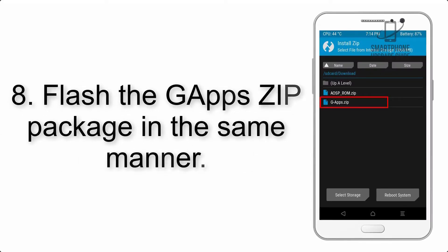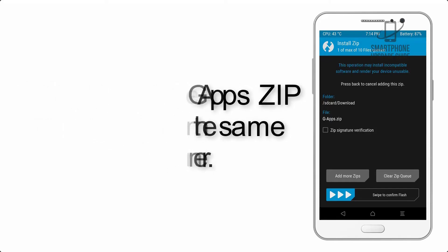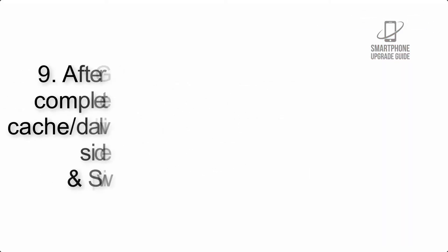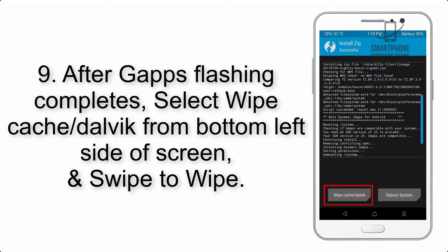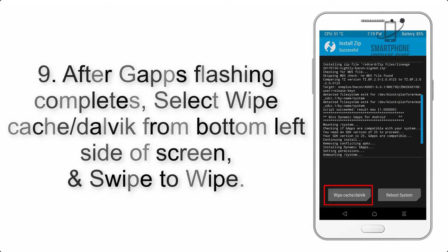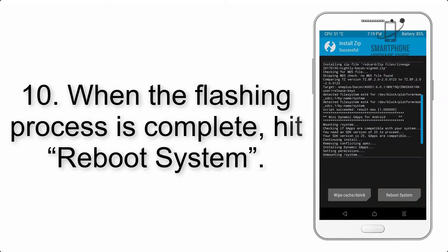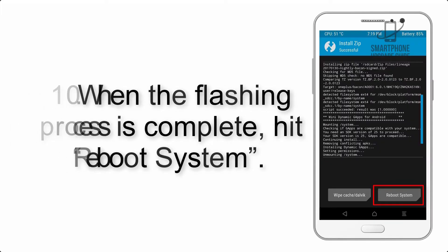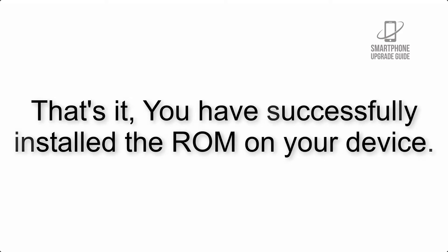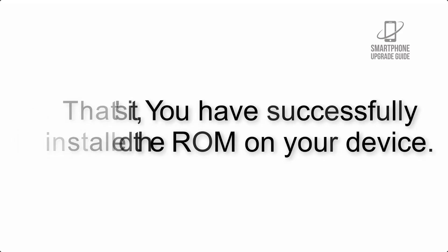Step 8: Flash the GApps zip package in the same manner. Step 9: After GApps flashing completes, select Wipe Cache and Dalvik from the bottom left side of the screen and swipe to wipe. Step 10: When the flashing process is complete, hit Reboot System. That's it — you have successfully installed the ROM on your device.